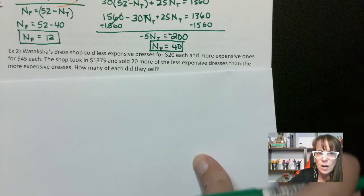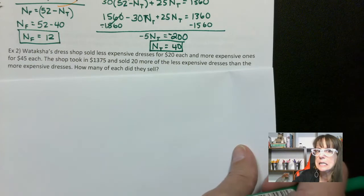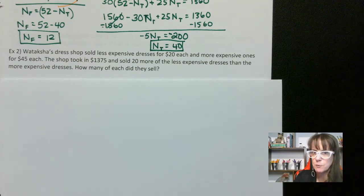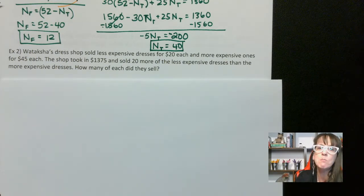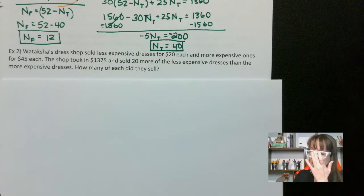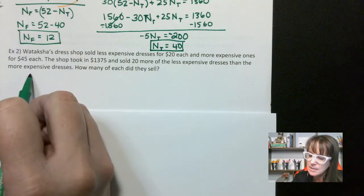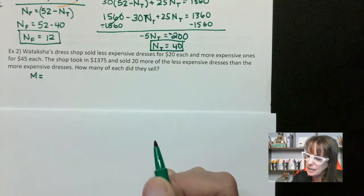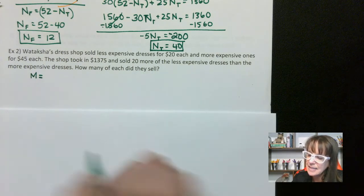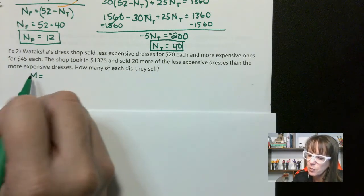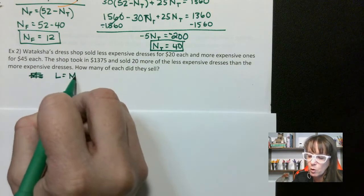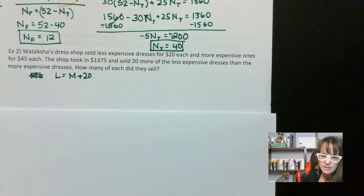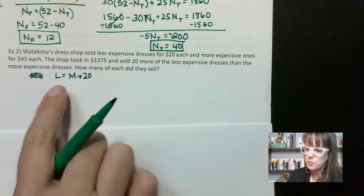This Watakashas dress shop sold less expensive dresses for $20 each and more expensive ones for $45. The shop took in $1,375 and sold 20 more of the less expensive dresses than the more expensive dresses. What we could say is the less expensive dress equals the more expensive one plus 20. But first we have to establish our variables.